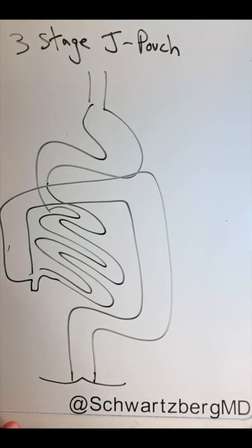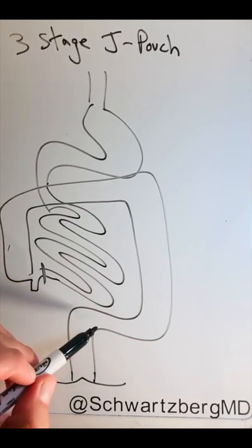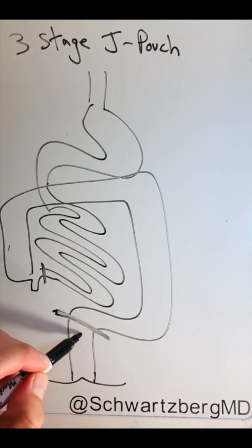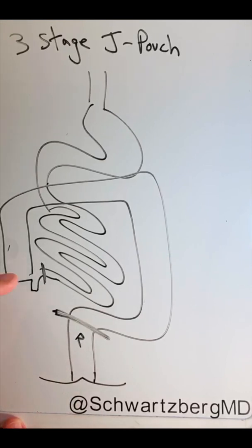But for the first stage of a J-pouch, you divide here and you divide here. What that means is the rectum is left in place and this terminal ileum is made into an end ileostomy.